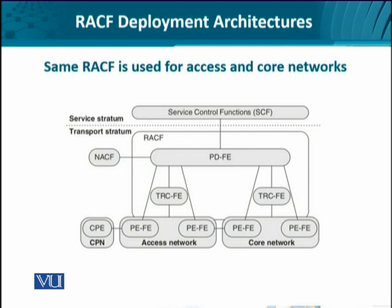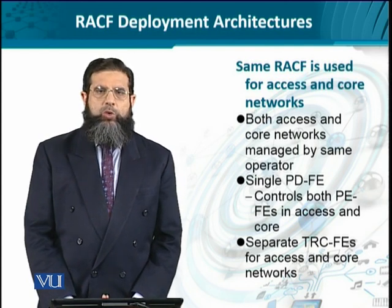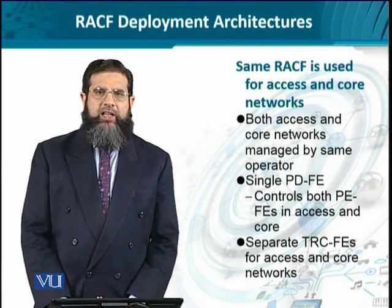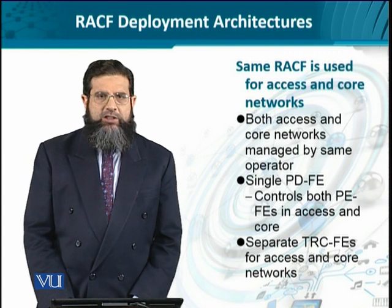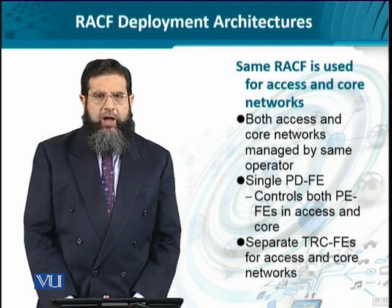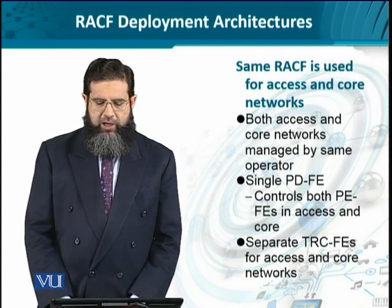The last option is when we have a single administrative control both for the core network and the access network. In that case there is not much involvement of SCF. The RACF with single administrative control results in a smoother and more harmonious interaction of the PDF-FEs for both the access and core networks. Since the PDF-FEs are part of the RACF, we are not going to see two PDF-FEs — there is just going to be one.